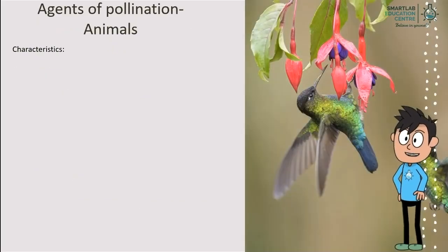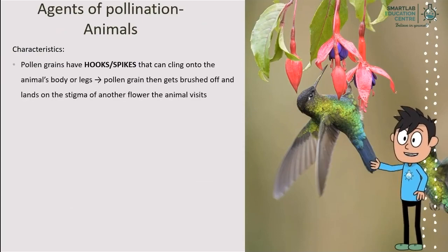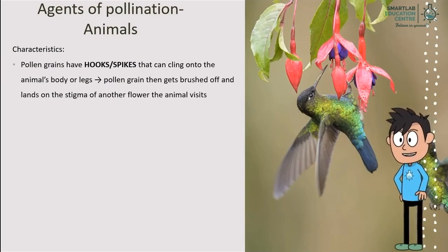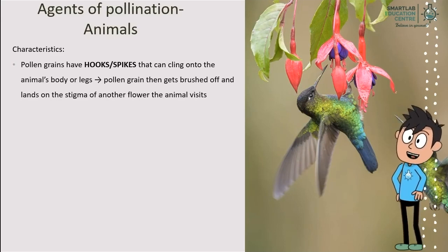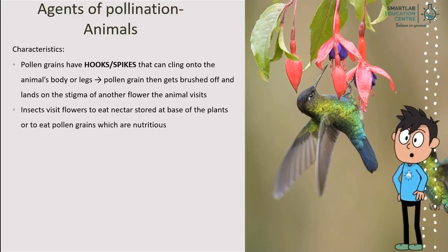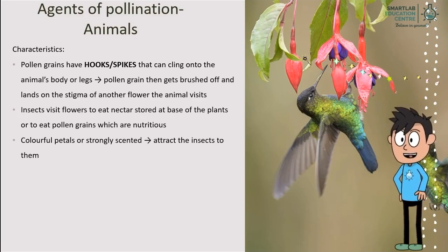Now, we will look at some characteristics of flowers pollinated by animals. Pollen grains of such flowers have hooks or spikes that cling onto an animal's body or legs. The pollen grains are then brushed off and land on the stigma of another flower the animal visits. These insects visit the flowers to eat nectar stored at the base of the plants, or to eat the pollen grains which are nutritious. These flowers also have colorful petals or are strongly scented, which attract insects to them.